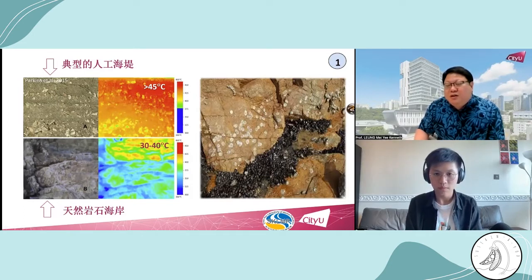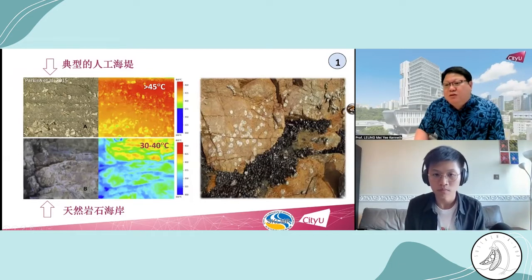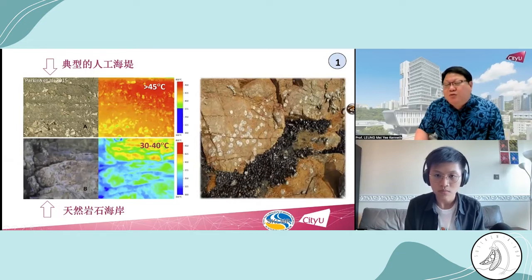On the other side, there is a lateral shoreline picture. You can see on the vertical side of the rock, all the barnacles die because of heat stress. But at the bottom, with a layer of water, all the mussels, barnacles, and other marine life do really well because of the lower temperature.